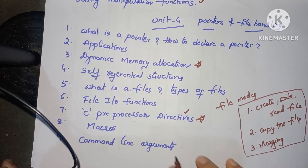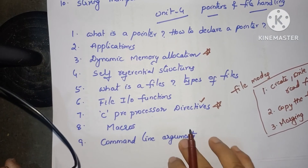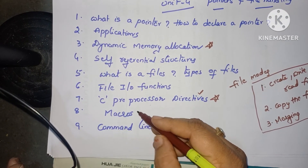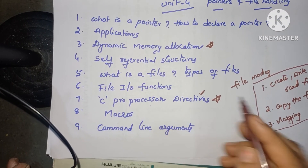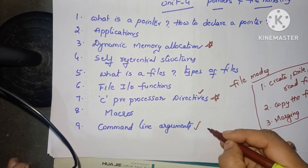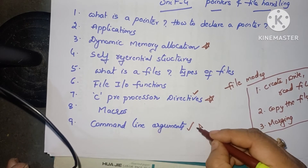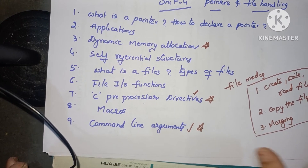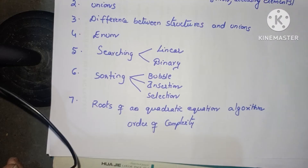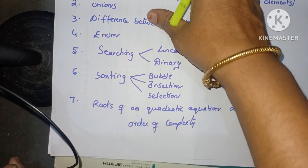Preprocessor directives — also a very important question. What are macros? Explain about macros. And command line arguments — also very important questions. These are the Unit 4 questions.